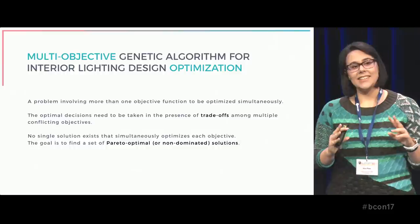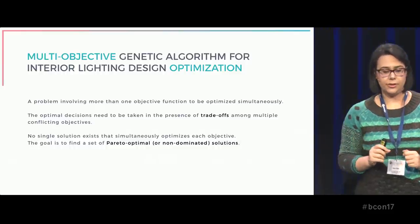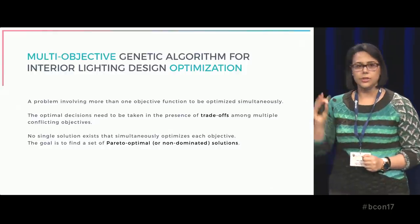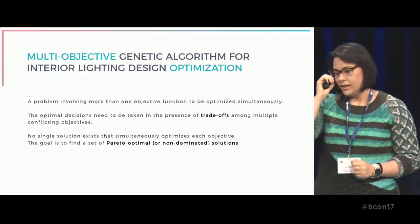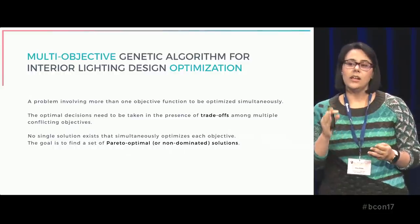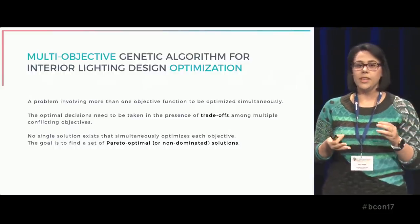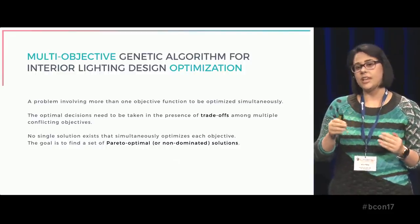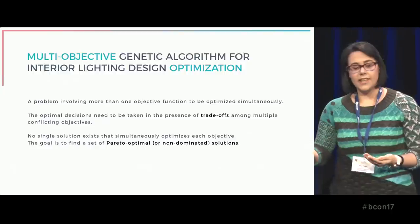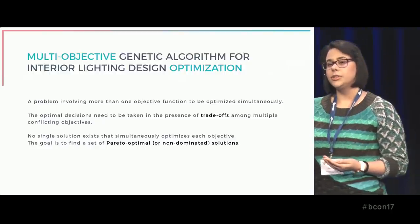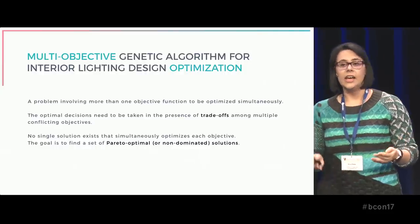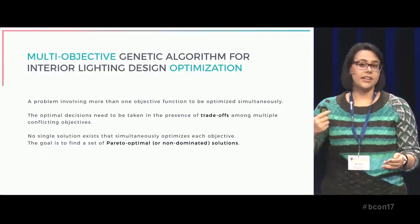For a non-trivial multi-objective optimization problem, no single solution exists that simultaneously optimizes each objective. Instead, there exists a set of Pareto-optimal solutions. A Pareto-optimal solution, or non-dominated solution, is one where none of the objective functions can be improved without degrading at the same time some of the other objective functions. For example, in our case, in a non-dominated solution, it's impossible to improve the quality of the lighting without at the same time increasing the energy consumed.